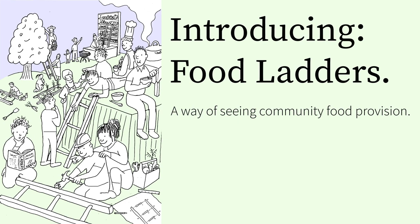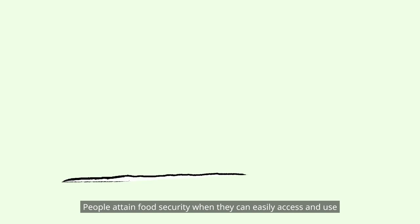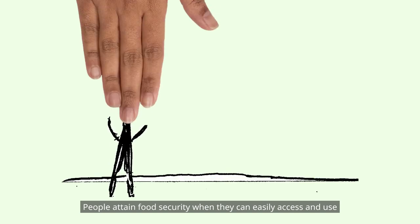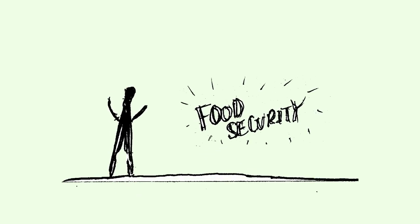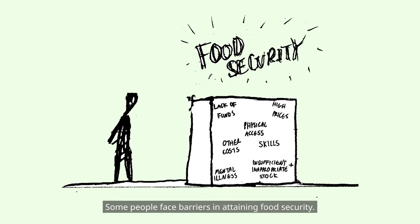Introducing Food Ladders — a way of seeing community food provision. People attain food security when they can easily access and use the food they need to live their best lives. Some people face barriers in attaining food security.